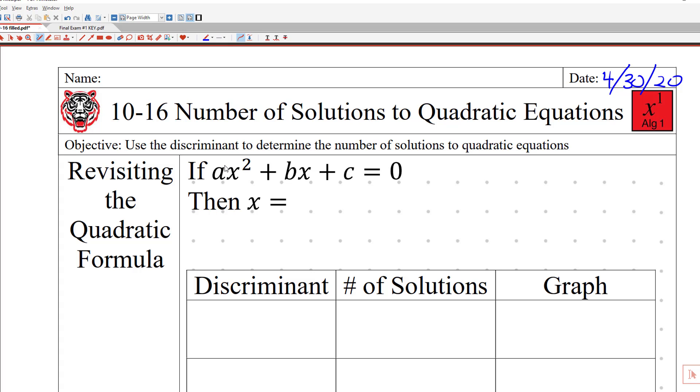To do that we are revisiting the quadratic formula. So again if I have a quadratic formula set up correctly where I have ax² + bx + c, that means the x's are in descending powers. It's going by highest degree term, next lowest degree term, next lowest degree term.